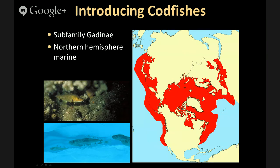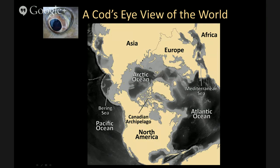To orient you to the map I just showed, since it's a somewhat odd projection: the Arctic Ocean is shown here, Asia is at the top, Europe and then Africa, with the Mediterranean Sea along the right, the Atlantic Ocean on the bottom right, North America on the bottom, the Canadian Archipelago — which is important for codfishes — the Bering Sea, another important region, and the Pacific Ocean on the bottom left.